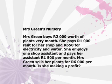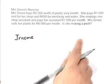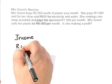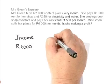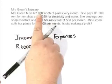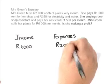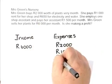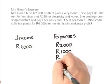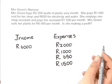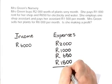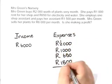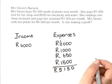We have two groups of information: the money she gets in and the money she pays out. So let's look at income, subtract her expenses, and see if she's making any money. Her income is 6,000 Rand. Now the expenses: 2,000 Rand for plants, 1,000 Rand for rent, 650 Rand for water and electricity, and 1,500 Rand for her shop assistant. Her total expenses come to 5,150 Rand per month.